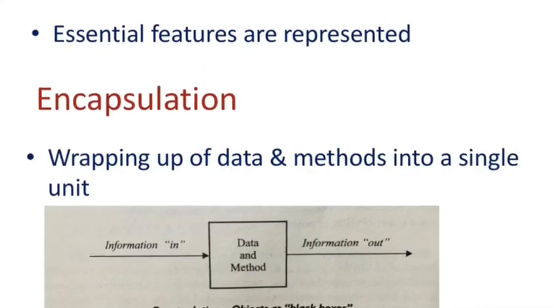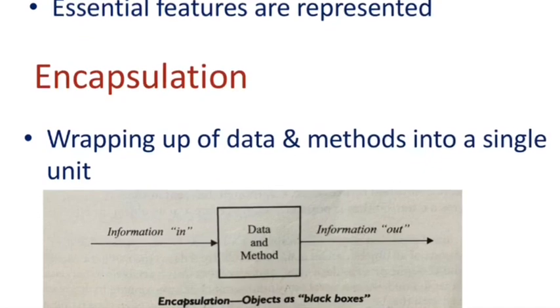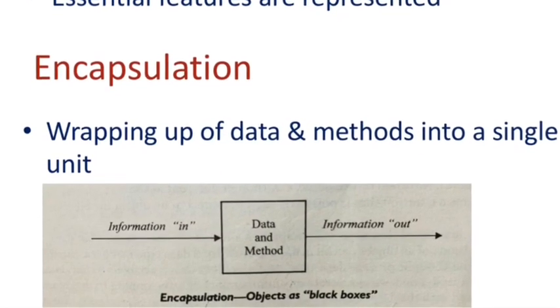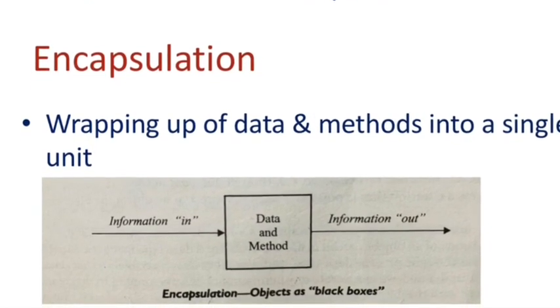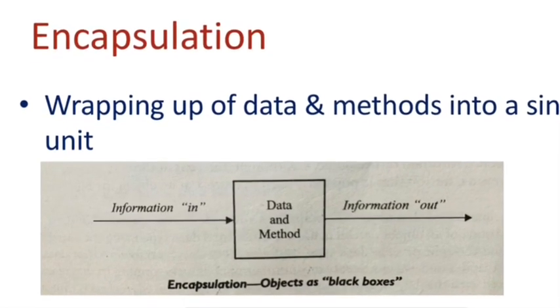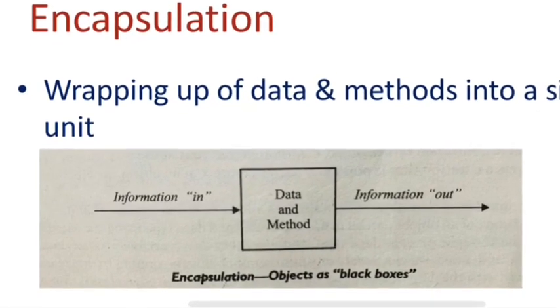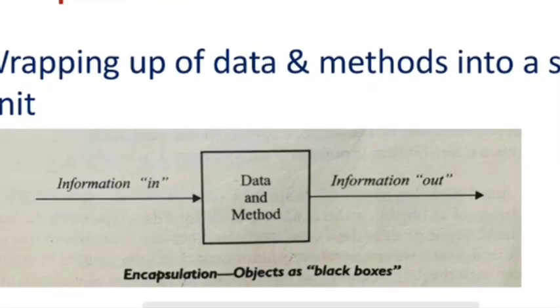Next property is data encapsulation which means the wrapping up of data and methods into a single unit as a class and it is the most striking feature of a class. The data is not accessible to the outside world and only those methods which are wrapped in the class can access it. This figure represents the encapsulation as objects as black boxes, each performing a specific task without any concern for internal implementation.